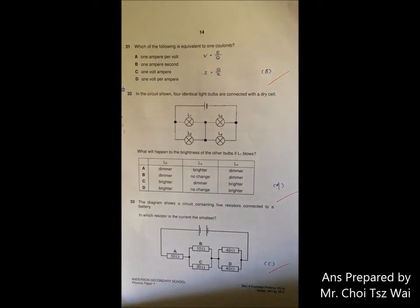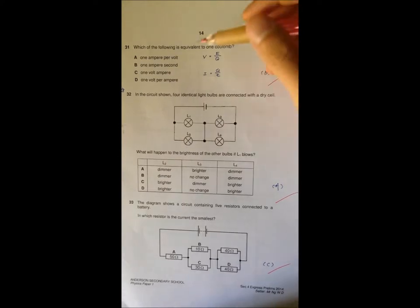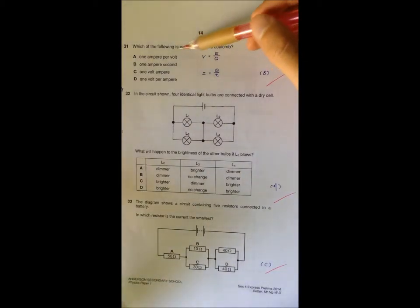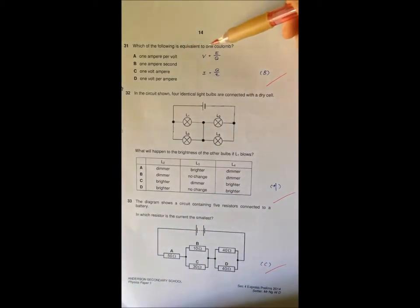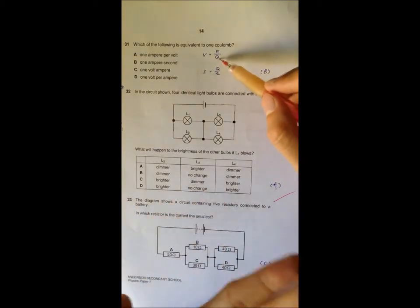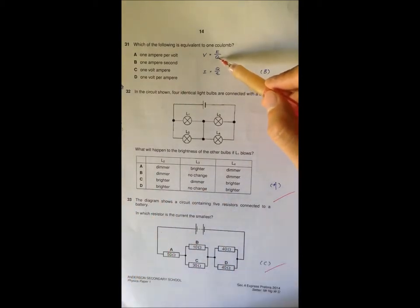Okay question 31 may be difficult if your mathematics are not that strong. They ask you to find an expression that is equal to one coulomb. You have a few equations that involve coulomb. Coulomb means the amount of charge represented by the letter q.